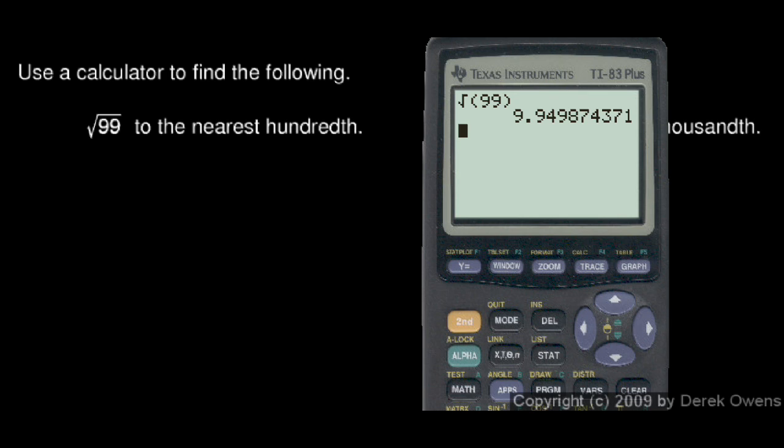And we see 9.949874371. We're told to give the answer to the nearest hundredth, so we need to round that. That will be two decimal places, or 9.95.